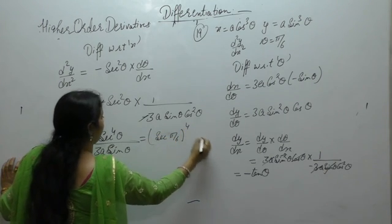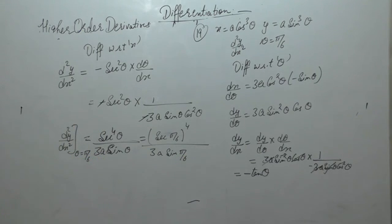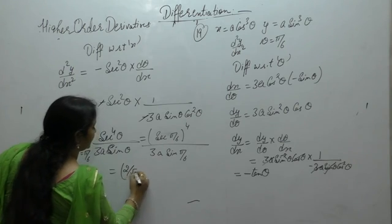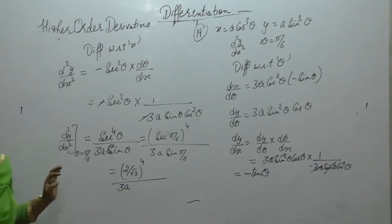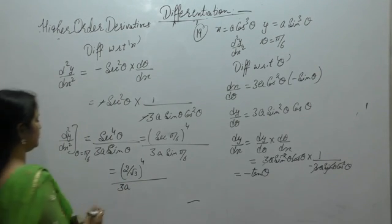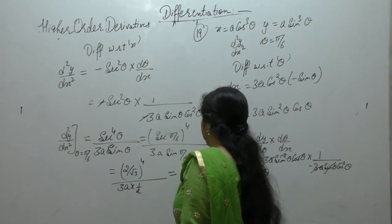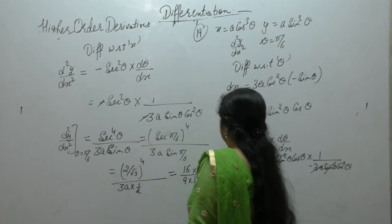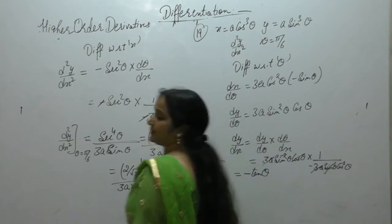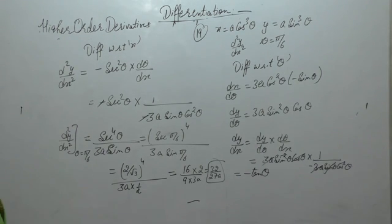The value of dθ/dx is minus 1 upon 3a sinθ cos²θ. So d²y/dx² equals sec²θ times minus 1 upon 3a sinθ cos²θ, which simplifies to minus sec⁴θ upon 3a sinθ. When θ equals π/6: sec(π/6) equals 2/√3 and sin(π/6) equals 1/2, giving d²y/dx² equals 32 upon 27a.